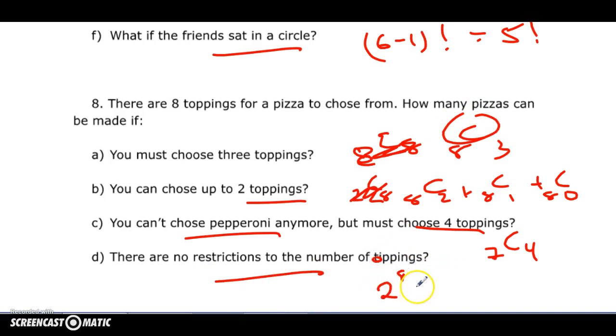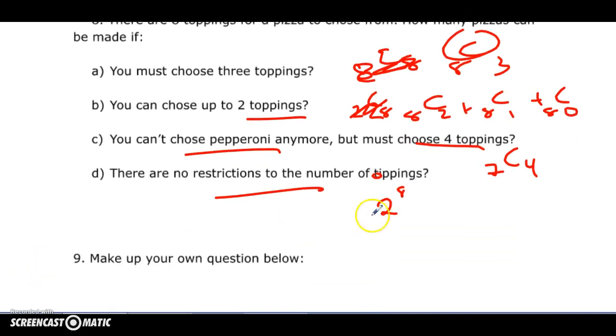And no restrictions to the number of toppings—what you're going to do, that's 2 to the n, which is 2 to the 8 in this case. And you ask yourself, do I subtract one or not? Is the empty set a pizza? Is no topping except for cheese a pizza? The answer is yes, so just leave it as this. Make up your own question below, and that's it. Hope that went all right, take care.